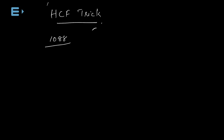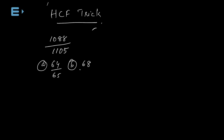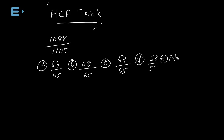1088 divided by 1105 — we are going to check the options. First option: 64 divided by 65. Second option: 68 divided by 65. Third option: 54 divided by 55. Fourth option: 53 divided by 55. And fifth option: none of these.